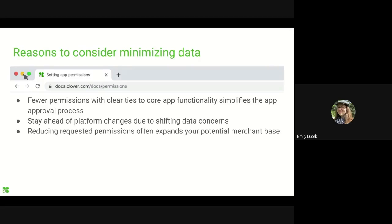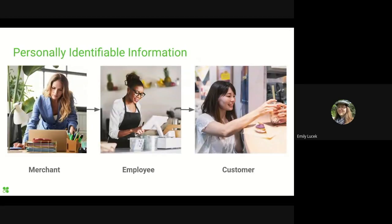Check out our app approvals overview webinar for more information on how permission justifications fit into the larger approval process — it's linked in the description below. Even if you're an established developer, reconsidering the relationship between your app and the data it uses can help you keep ahead of the curve, as concern about the storage and usage of data has been changing the digital landscape. You may also want to see if you can broaden your user base to merchants who can't currently access your app.